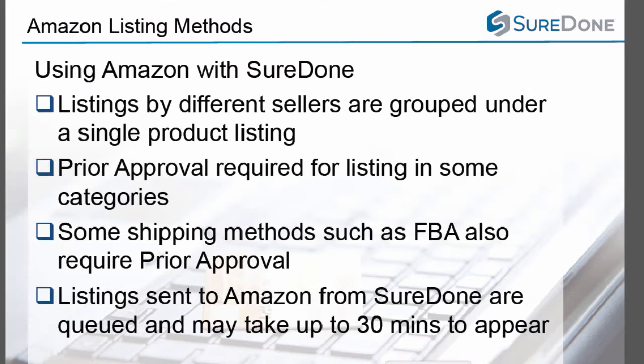Prior approval is required for listing in some categories, so do be aware. Some shipping methods, such as Fulfilled by Amazon, also require prior registration. Please speak to your Amazon rep about what approval is going to be required for your specific listing needs.